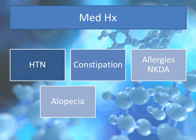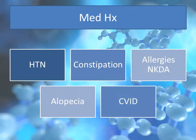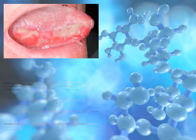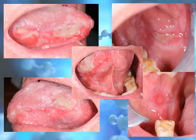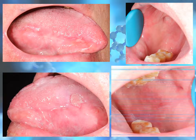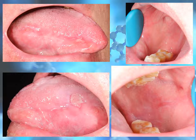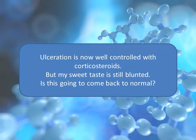His medical history included hypertension, no known allergies, constipation, alopecia, and of course CVID. This was his initial presentation of oral mucosa when he came to our clinic. And this is his oral mucosa after a few months of treatment with dexamethasone mouth rinse and clotrimazole gel. Ulceration is now well controlled with topical corticosteroid application on an as-needed basis. However, he is still complaining about the blunted taste for sweet.